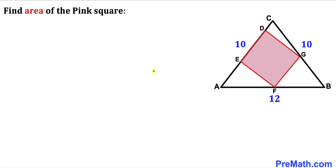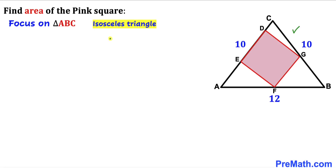Let's get started. Focusing on triangle ABC, we can see that it is an isosceles triangle since these two side lengths have equal length. Therefore we conclude that the base angles are equal — if we call one angle alpha, then the other base angle is alpha as well.